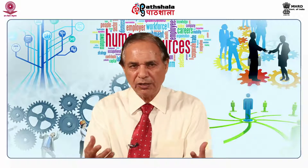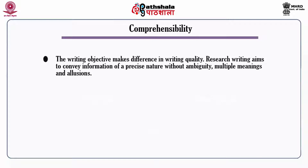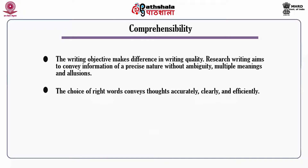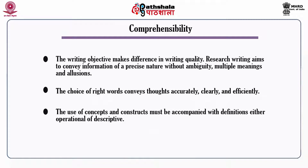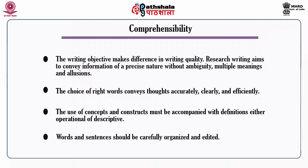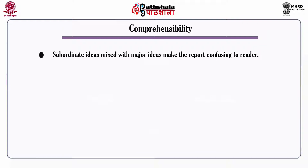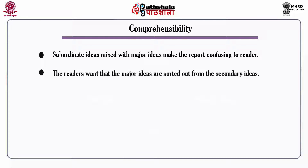However, such measures provide merely a rough estimate of the true readability of a report. Comprehensibility: the writing objective makes a difference in writing quality. Research writing aims to convey information of a precise nature without ambiguity, multiple meanings and allusions. The choice of right words conveys thoughts accurately, clearly and efficiently. The use of concepts and constructs must be accompanied with definitions, either operational or descriptive. Words and sentences should be carefully organized and edited. Subordinate ideas mixed with major ideas make the report confusing to the reader.